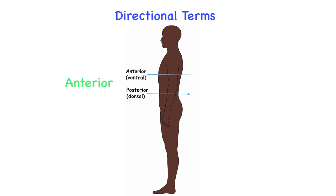The term anterior means towards the front of the body. Since we are standing up straight in anatomical position looking forward, anterior is also the ventral, or belly, portion of the body. Posterior refers to the back of the body, also called dorsal. So anterior is the front, posterior is the back; ventral refers to the belly and dorsal refers to the back.